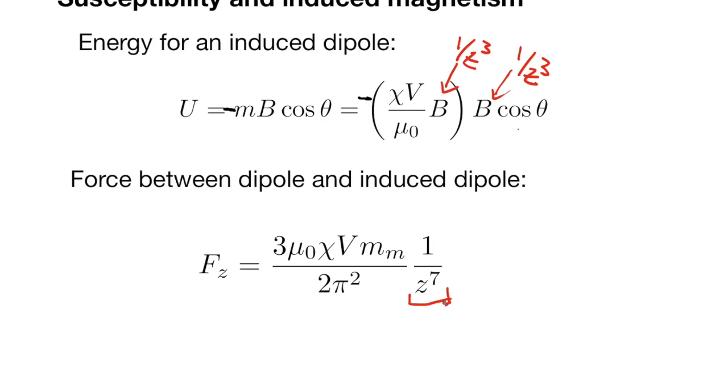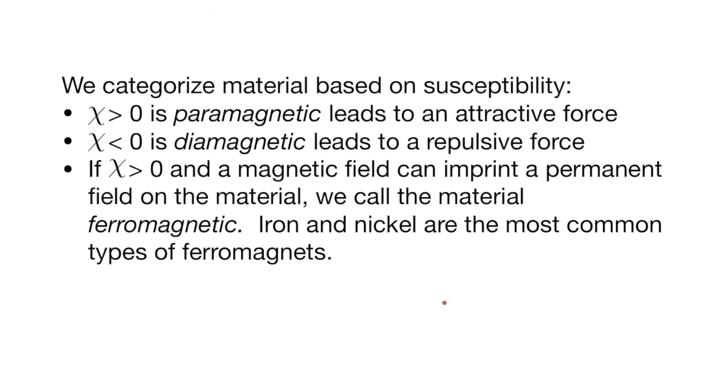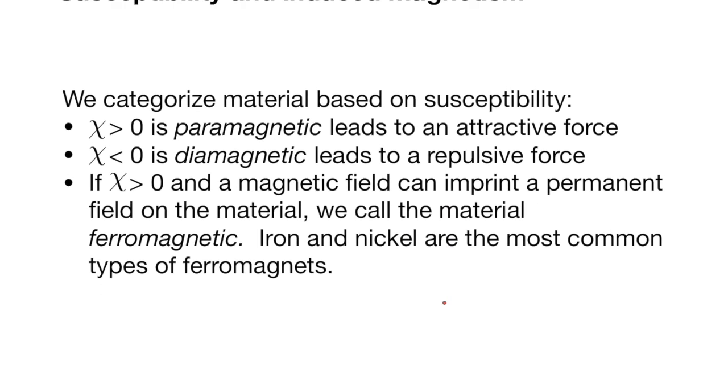We describe the materials that we deal with based on their values of the susceptibility. If χ is greater than zero, we call that a paramagnetic material. And that ends up leading to an attractive force between the magnets. If χ is less than zero, we call that diamagnetic. And that leads to a repulsive force.